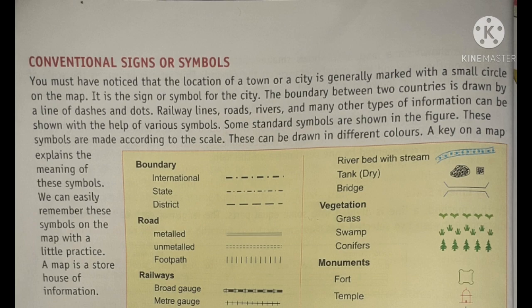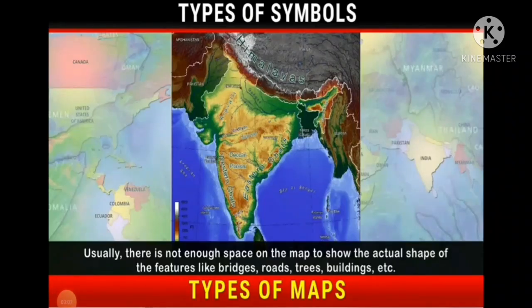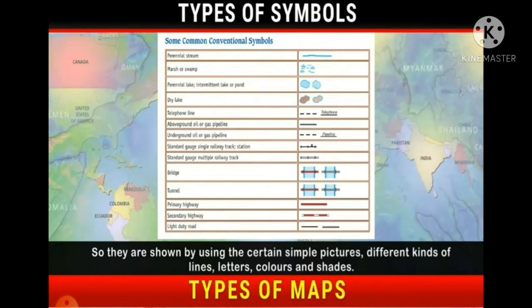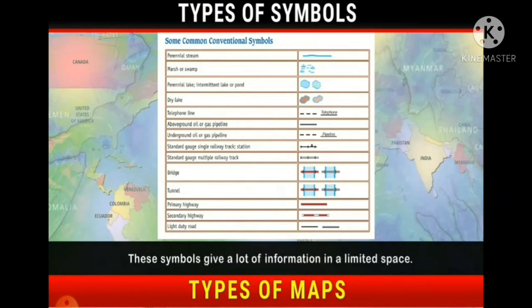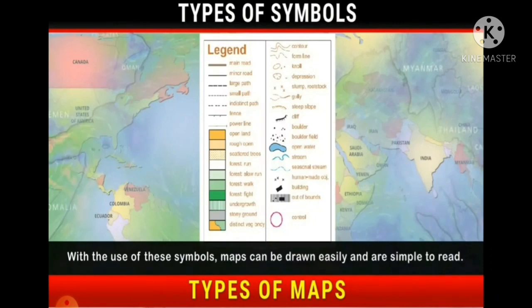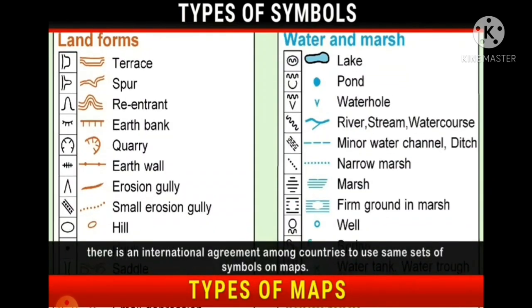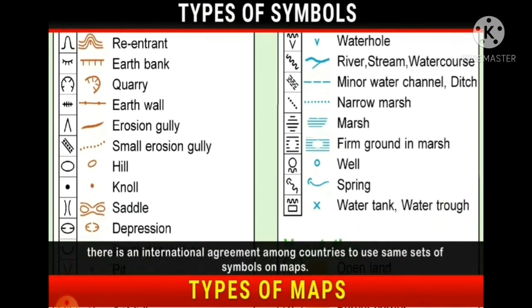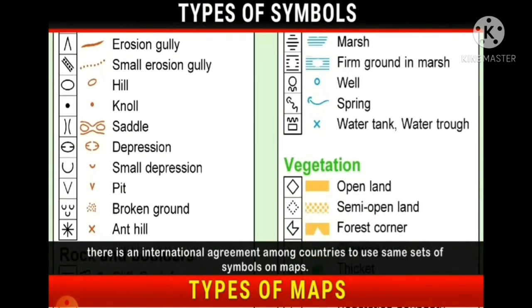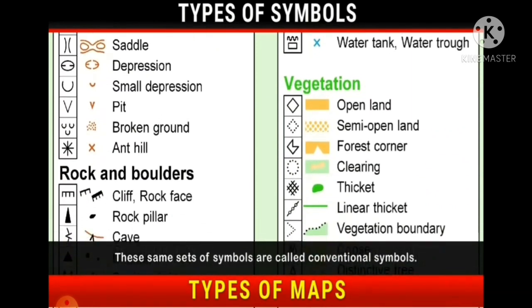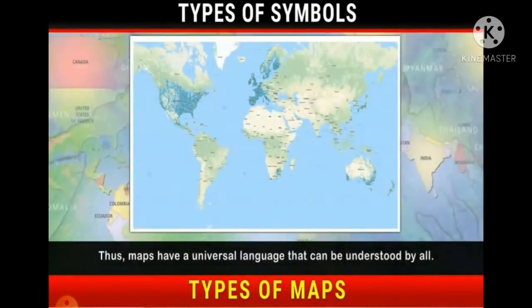A map is a storehouse of information. Usually there is not enough space on the map to show the actual shape of features like bridges, roads, trees, and buildings. So they are shown using certain symbols, pictures, different kinds of lines, letters, colors and shades. These symbols give a lot of information in a limited space and make maps easy to draw and simple to read. In order to make it easy for tourists and others to understand the local map of any country, there is an international agreement among countries to use the same sets of symbols on maps. These same sets of symbols are called conventional symbols.